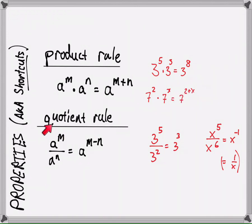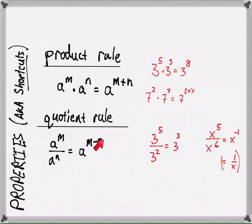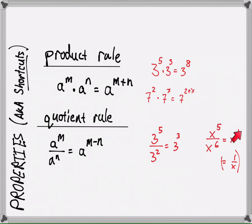In the quotient rule, when we divide instead of multiplying, where we add the total number of factors, when we divide two common factors we get one. So we subtract off all of the common factors and see how many are left. A to the M over A to the N equals A to the M minus N. Three to the fifth divided by three squared equals three cubed — there are 3 extra sets of three on top. Five to the fifth over five to the sixth gives us 5 to the negative one, which equals 1 over X by definition of negative exponents.